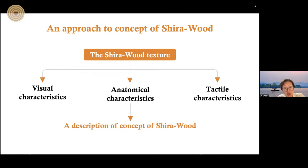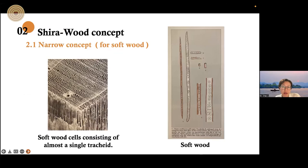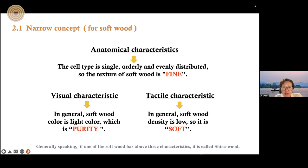Based on the Shirawood texture and the visual anatomical texture characteristics, the concept was described. Now for the second part about the Shirawood concept: first, we want to talk about the narrow concept of Shirawood for softwood. As we all know, softwood cells consist of almost a single tracheid, as we can see in the figures.